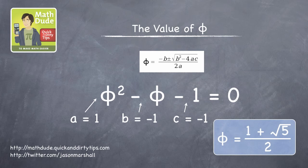one of which is 1 plus the square root of 5 all over 2. Which, yes, you guessed it, has a decimal value of approximately 1.618.